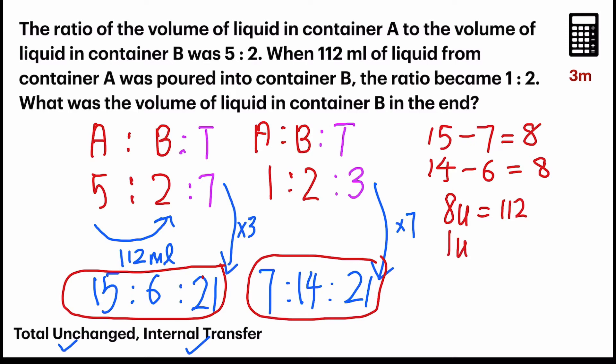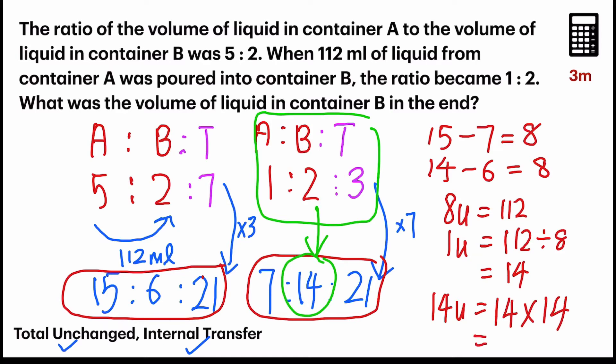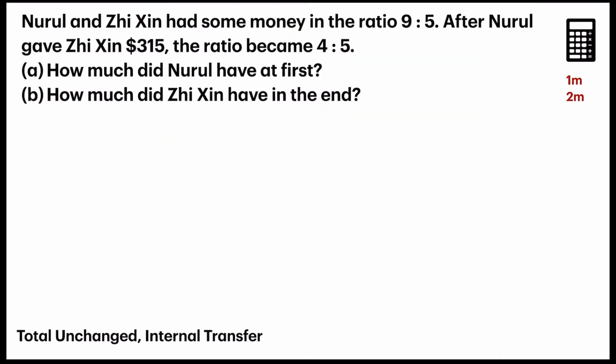Now, with that, I always like to find the key to the question. That is the most important step to find one unit. So, 112 divided by 8, I get 14. Now, back to the question. What was the volume of liquid in container B in the end? Look for the correct ratio. This is the end ratio, but you look at the new ratio, which is 14. So, we are finding 14 units. One unit is 14, so 14 units will be 14 times 14. That gives us 196. So, my answer is 196 milliliters. At this point in time, you should know this skill. To change ratio to equivalent ratio based on total unchanged. Pause the video and try this question before I go through it. Remember to look out for internal transfer and to apply the total unchanged concept.